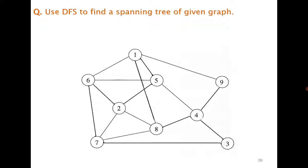Let us use DFS to find a spanning tree of the following graph. I start with vertex 1. From vertex 1 I find its neighbor 5, so I move to 5. From 5 I go to neighbor 2 — I could also have gone to 4, so there can be multiple valid DFS or BFS trees. From 2 I go to 6, then 6 to 7, then 7 to 3.